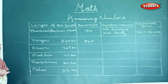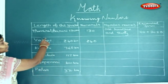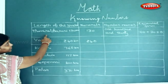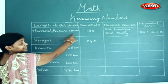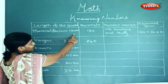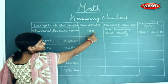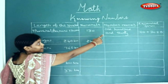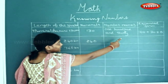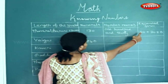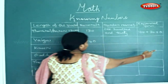Now we will fill up the details in the following table. Here one example has already been done for you. The length of the river Tamrabarni is 130 kilometers. In numerals we write it as 130. The number name is 130, and the expanded form would be 100 plus 30 plus 0.